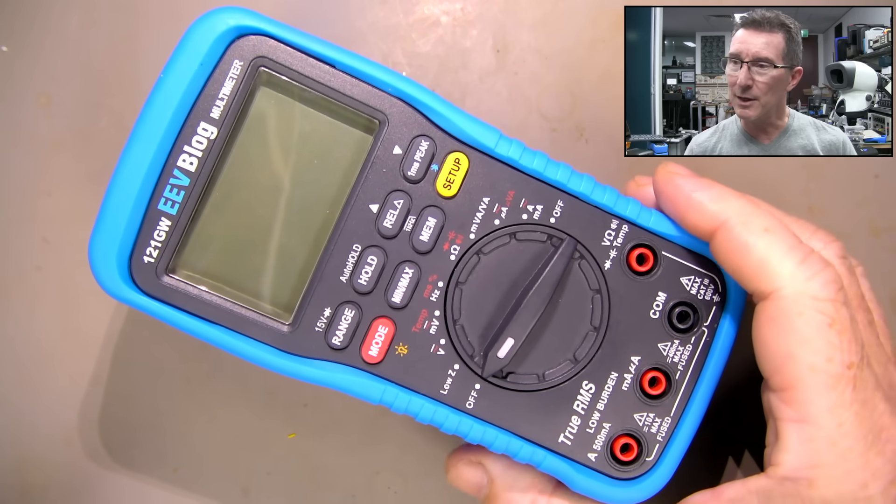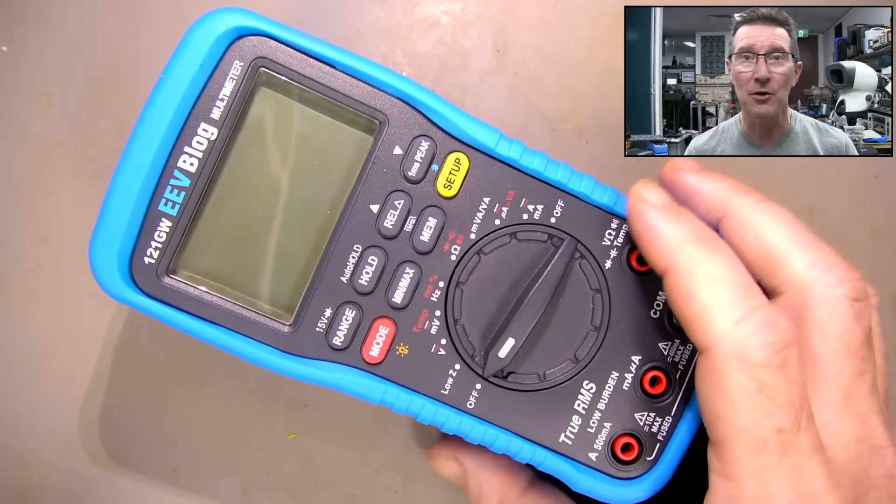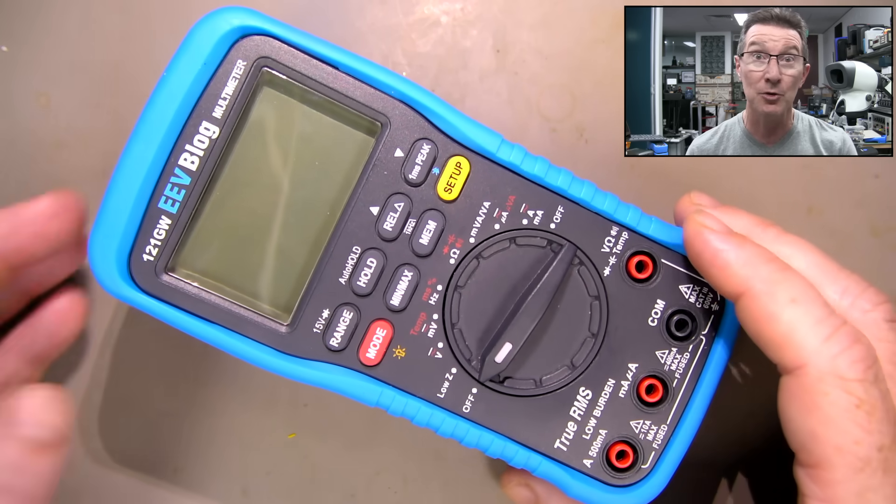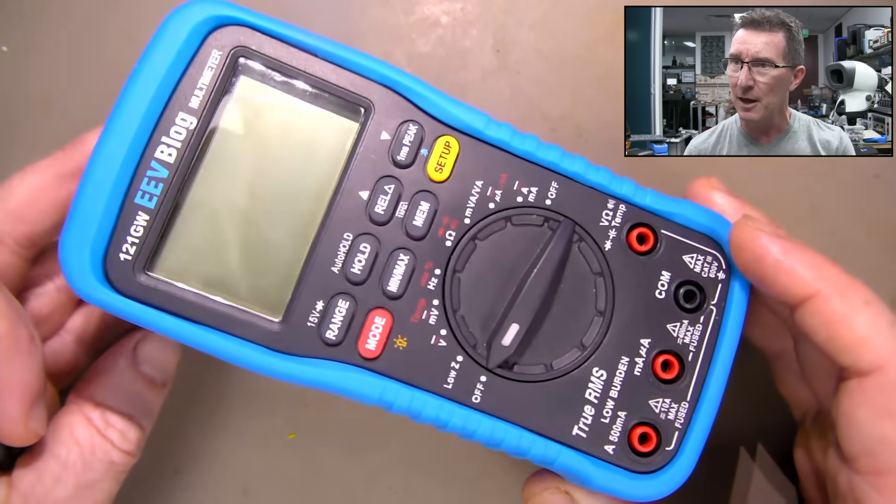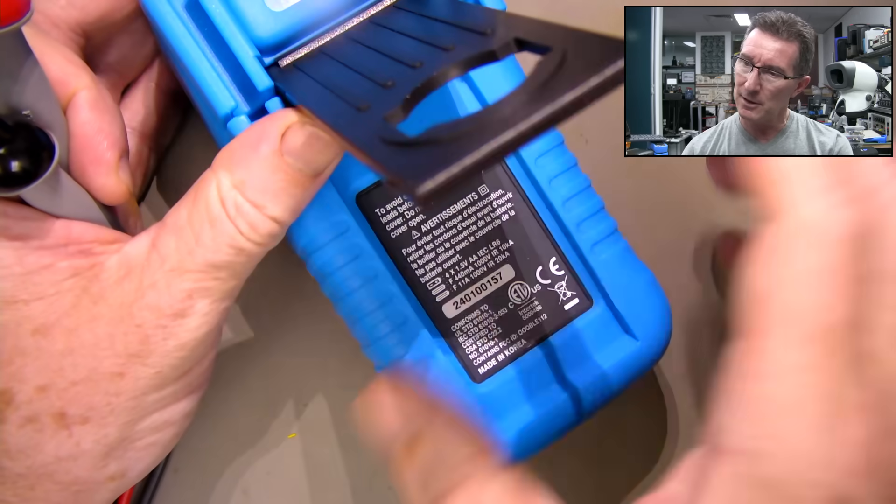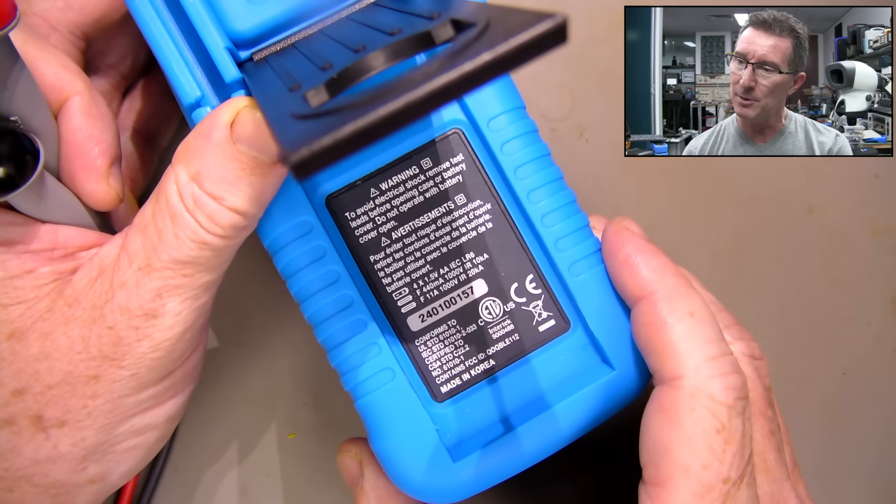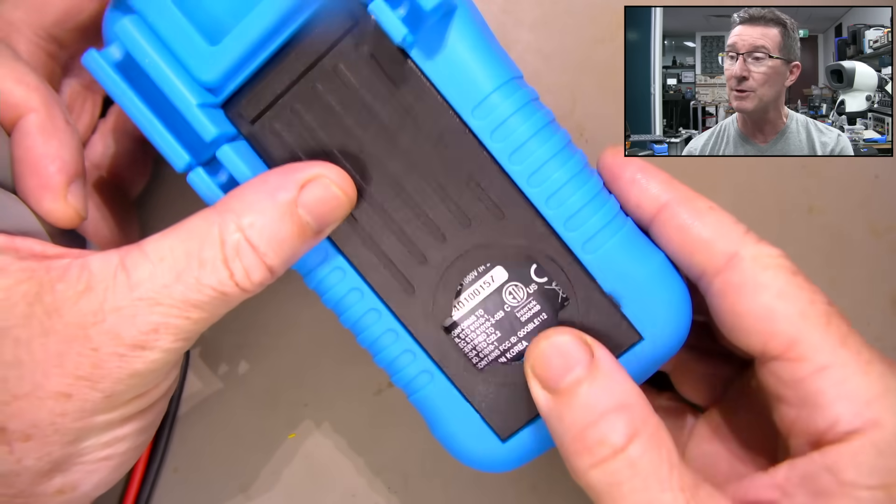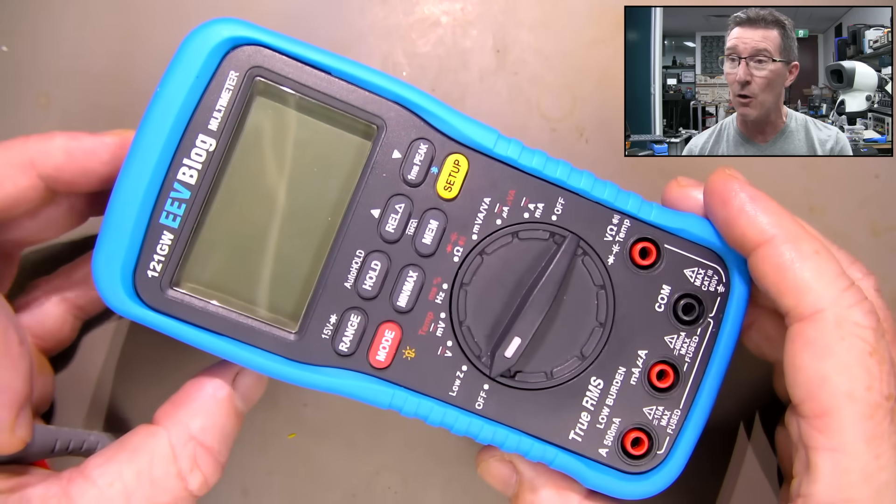Hi, I've got a 121GW meter returned from our fellow YouTuber Adrian Smith. We'll have a look at his channel in a minute. So here it is. I don't know if he recorded the serial number, but there it is. So it's a recent one, less than 12 months old.